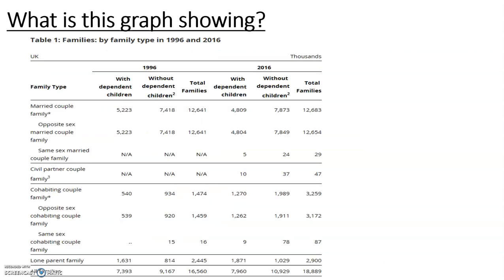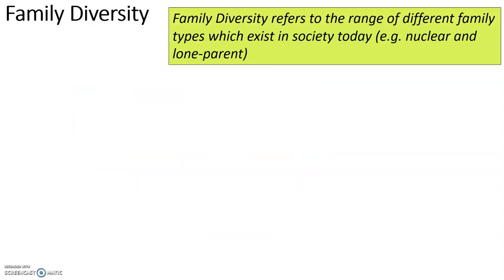Here is another graph — they could give you graph data in the exam to look at. What would this table show? So, family diversity then.